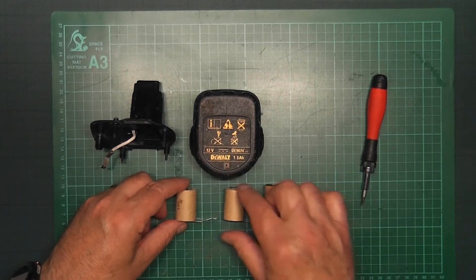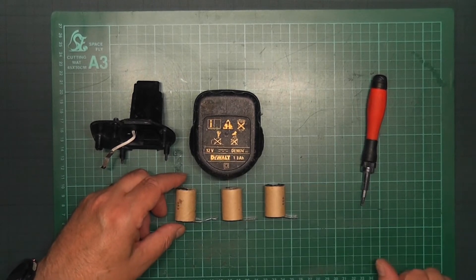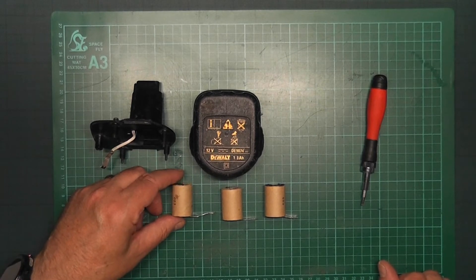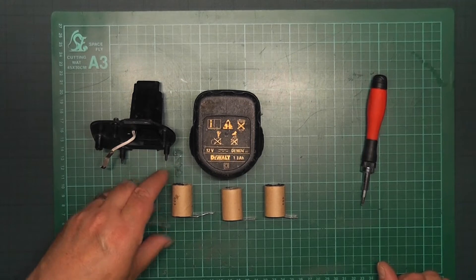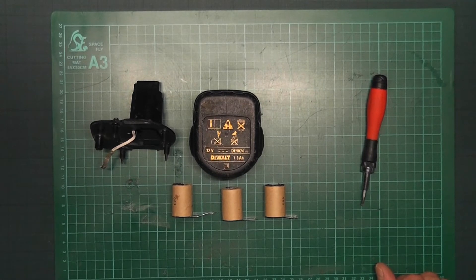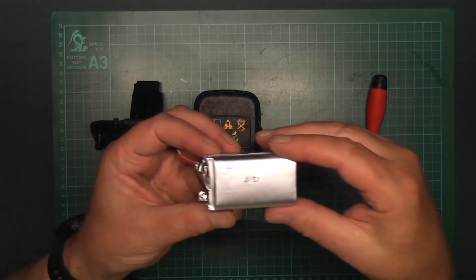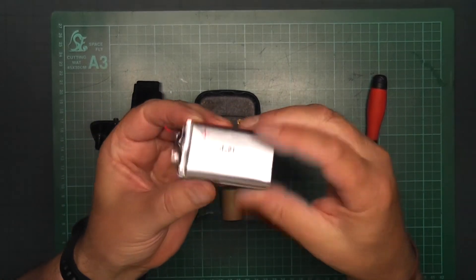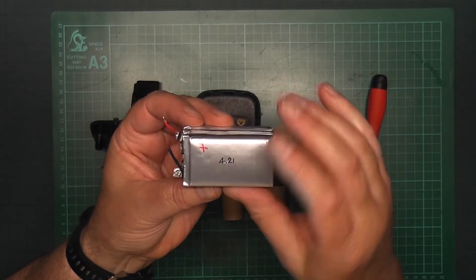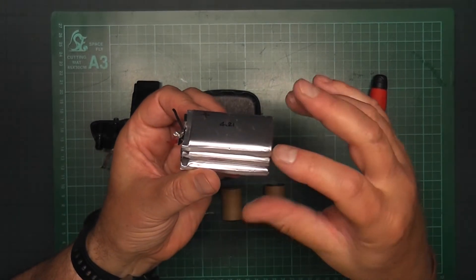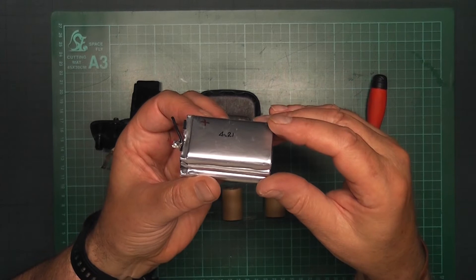Ten of these is 10 by 1.2 volts, so it would be 12.4 volts. What we're going to do is I pulled apart a laptop battery pack and I have these batteries here, charged up to 4.21 volts. It's claimed that they are 2000 milliamps each.